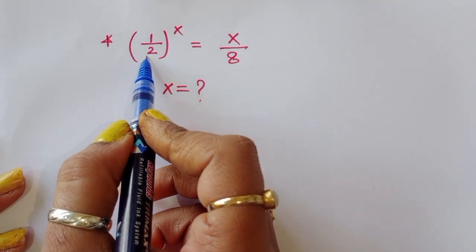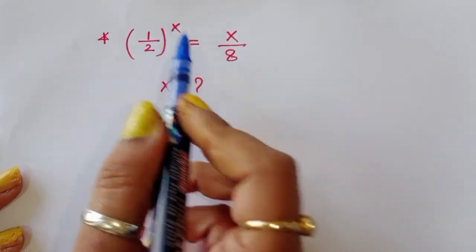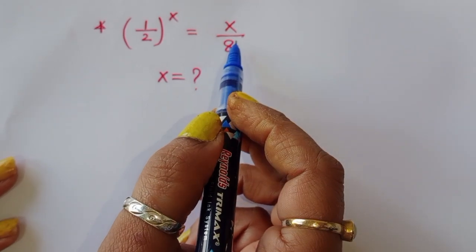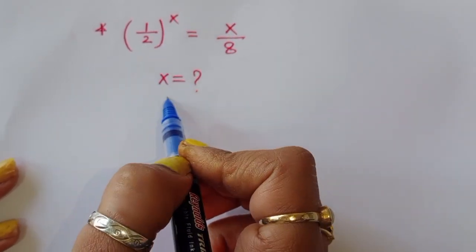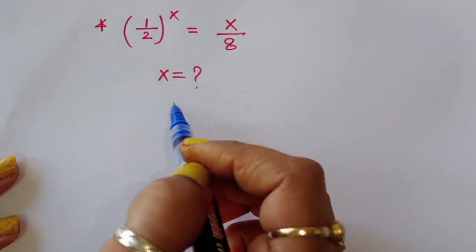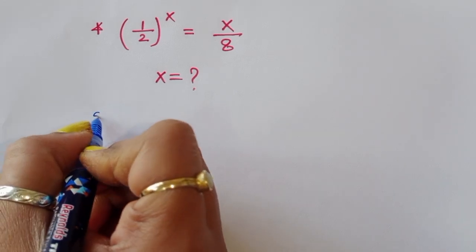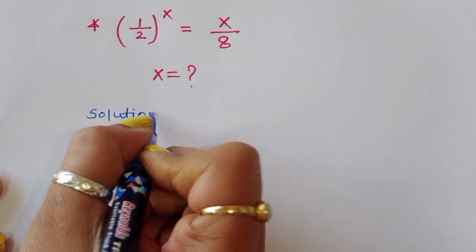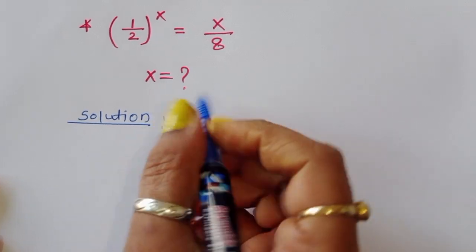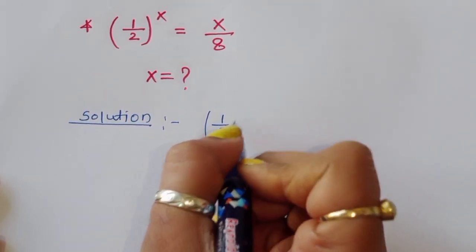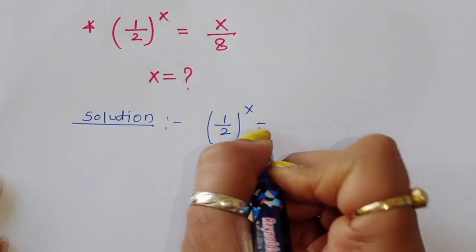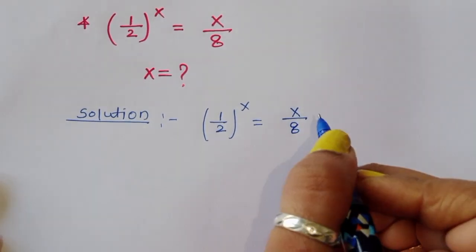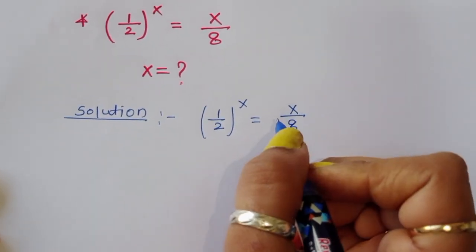The question is: 1 upon 2 power x is equal to x upon 8. We have to find out the value of x. Let's see the solution.